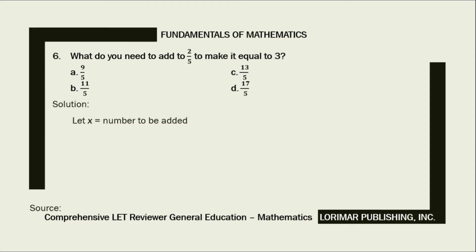To solve this problem, we will first translate our sentential expression to its mathematical equivalent. That is x, which is the number to be added, plus 2 fifths equals 3.